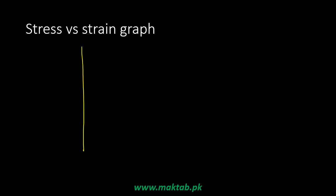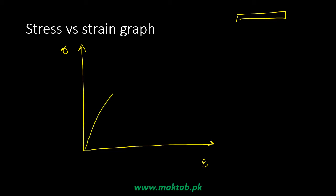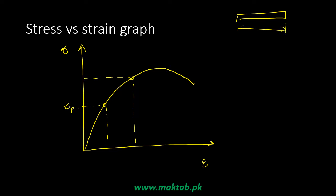When we plot stress vs. strain for a solid being tested in tension, we get a characteristic graph that can be divided into regions. The first region is a straight line where stress and strain are directly proportional — up to the proportional limit, represented as sigma_p. After this, if more stress is applied, strain is no longer directly proportional, but if stress is removed within a specific limit, the solid returns to its original length.